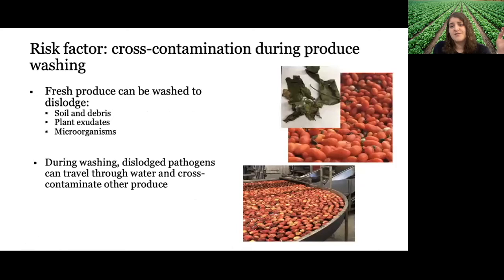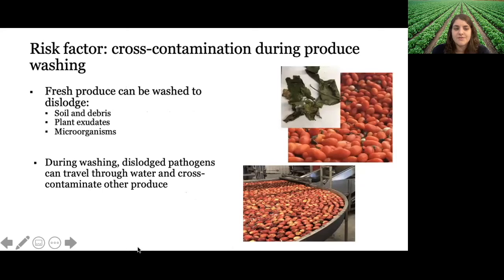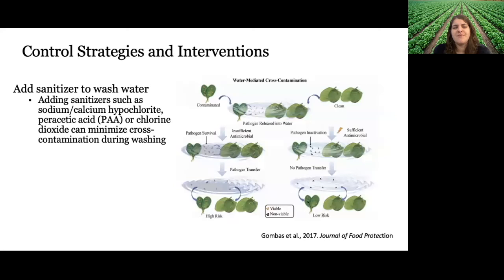Cross-contamination during produce washing is another risk factor. You wash produce to remove soil, debris, plant exudates, insect eggs, and microorganisms — some of which could potentially be pathogens. During washing, dislodged pathogens could travel through the water and cross-contaminate other produce. A fairly obvious control strategy is to add sanitizer — sometimes called a wash water antimicrobial — to your wash water. These can include sodium hypochlorite, peroxyacetic acid, or chlorine dioxide. Adding antimicrobials to wash water can prevent the transfer of pathogens from contaminated produce to uncontaminated produce.